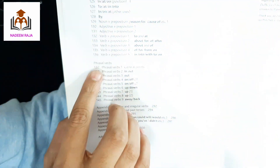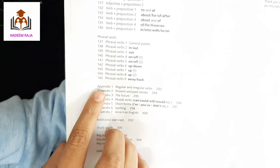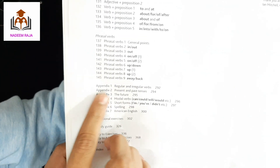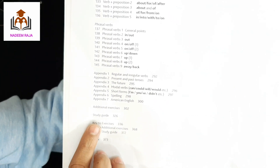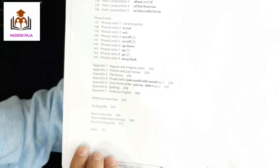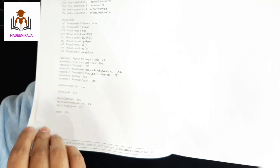There are also Prepositions, Phrasal Verbs, and Appendix 1 through 7 — so there are 7 appendices in total.